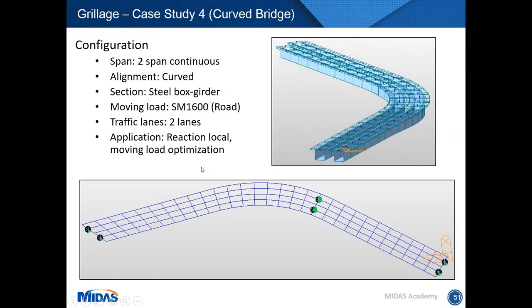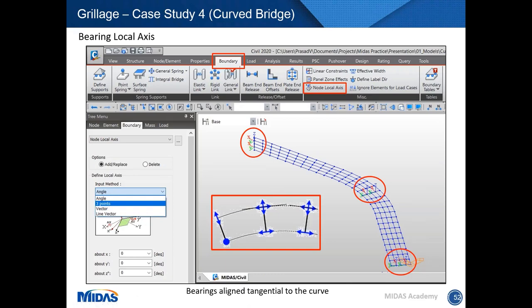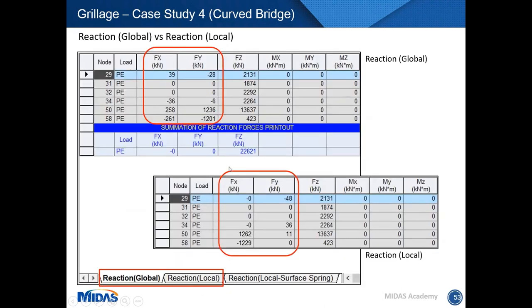The next example is a two-span continuous steel box girder bridge that is curved in profile, demonstrating how to define local reaction axes and how to use moving load optimization. For a curved bridge, local axes can be assigned to supports or bearings — either tangential to the curve or aligned toward the point of fixity — via Boundary > Node Local Axes. Results can then be obtained in either global or local direction.